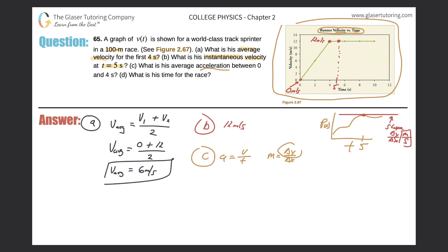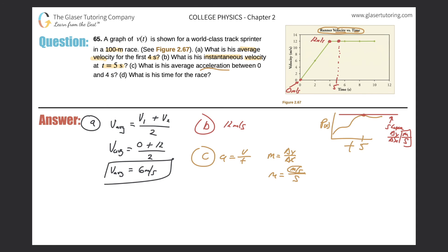Considering the slope: m equals meters per second divided by seconds, on the x-axis. Meters per second correlates with velocity; seconds correlates with time. Since v over t equals acceleration, and the slope equals v over t, then acceleration equals slope. In other words, the acceleration is the slope of this velocity-time graph.